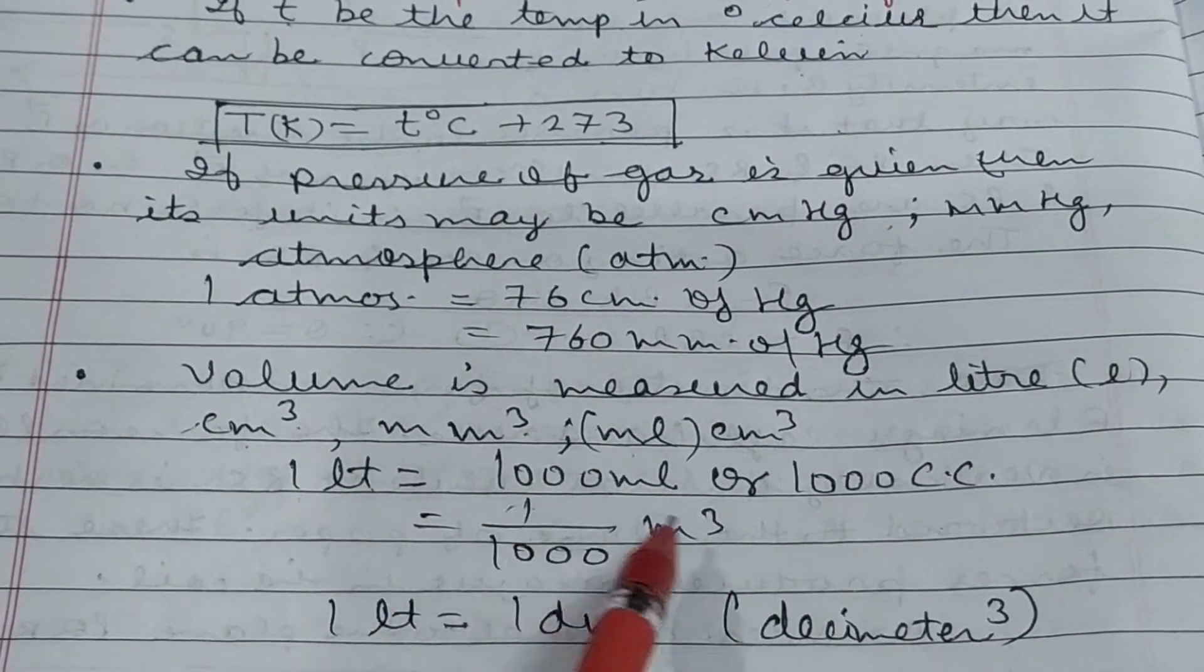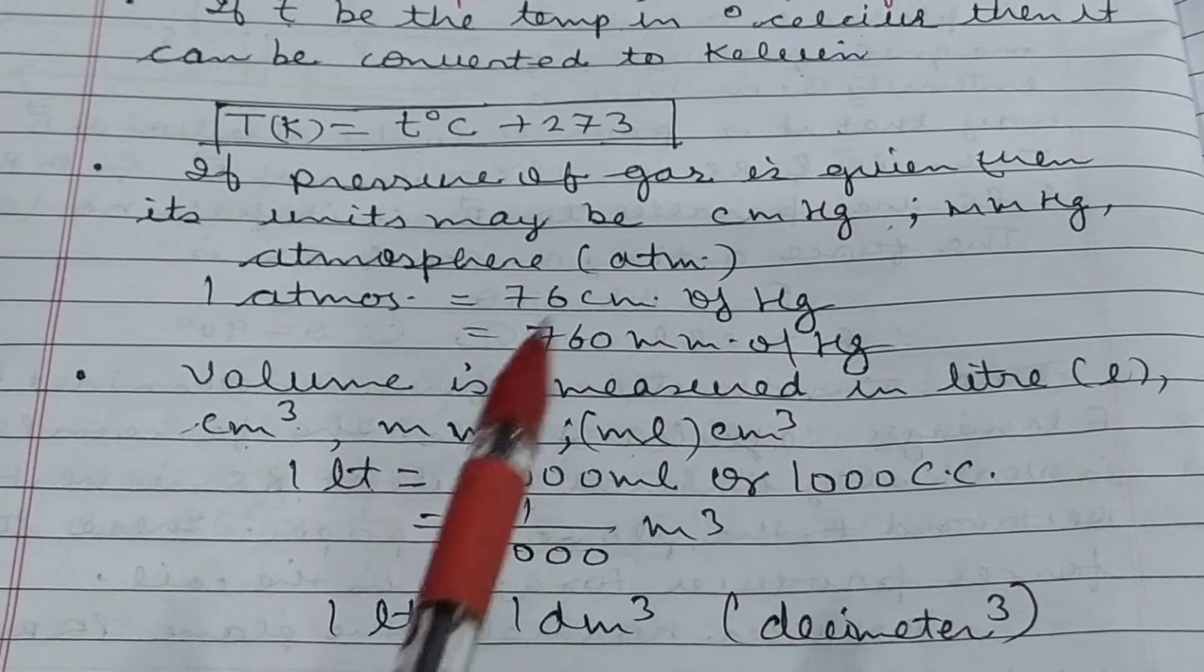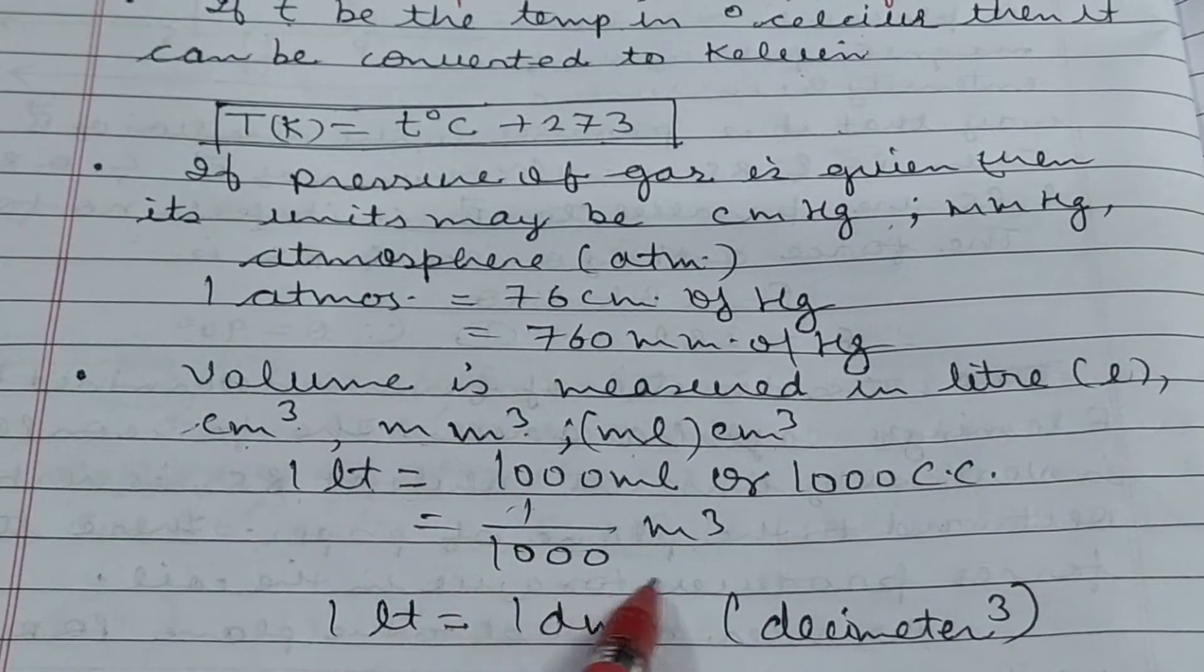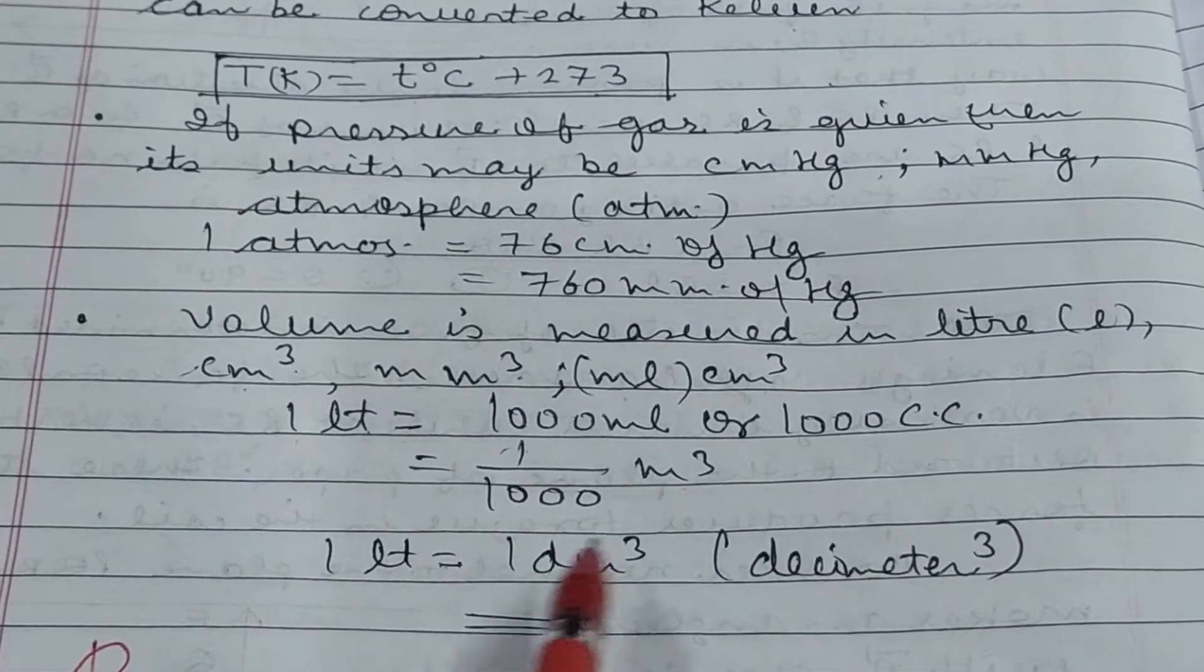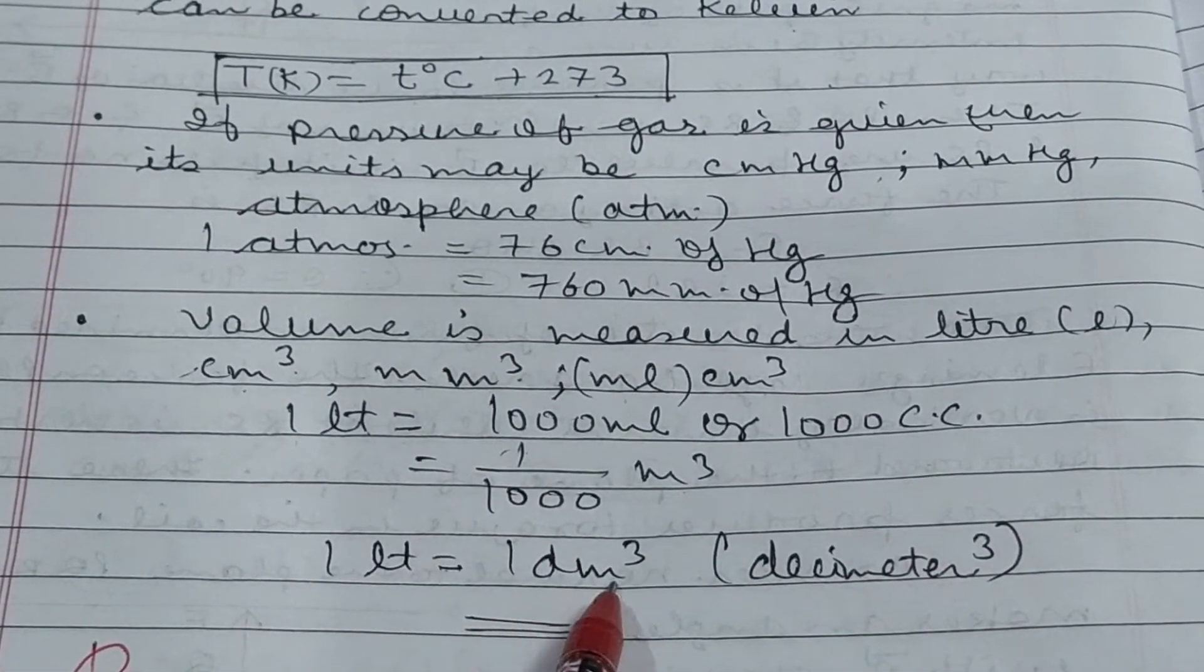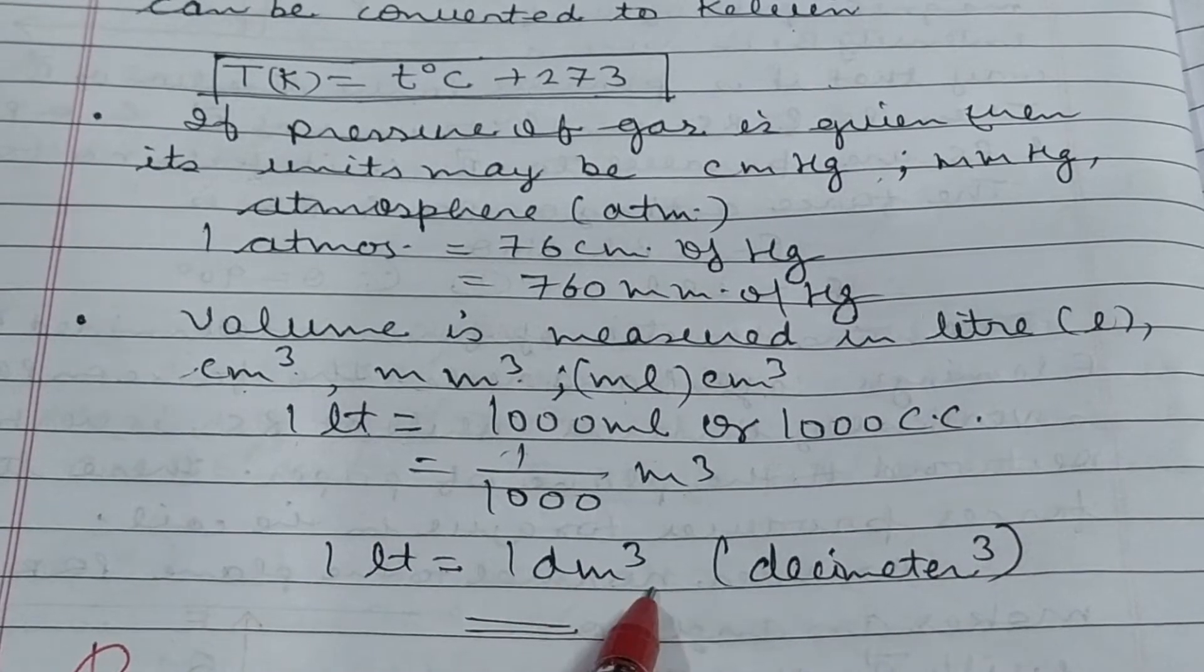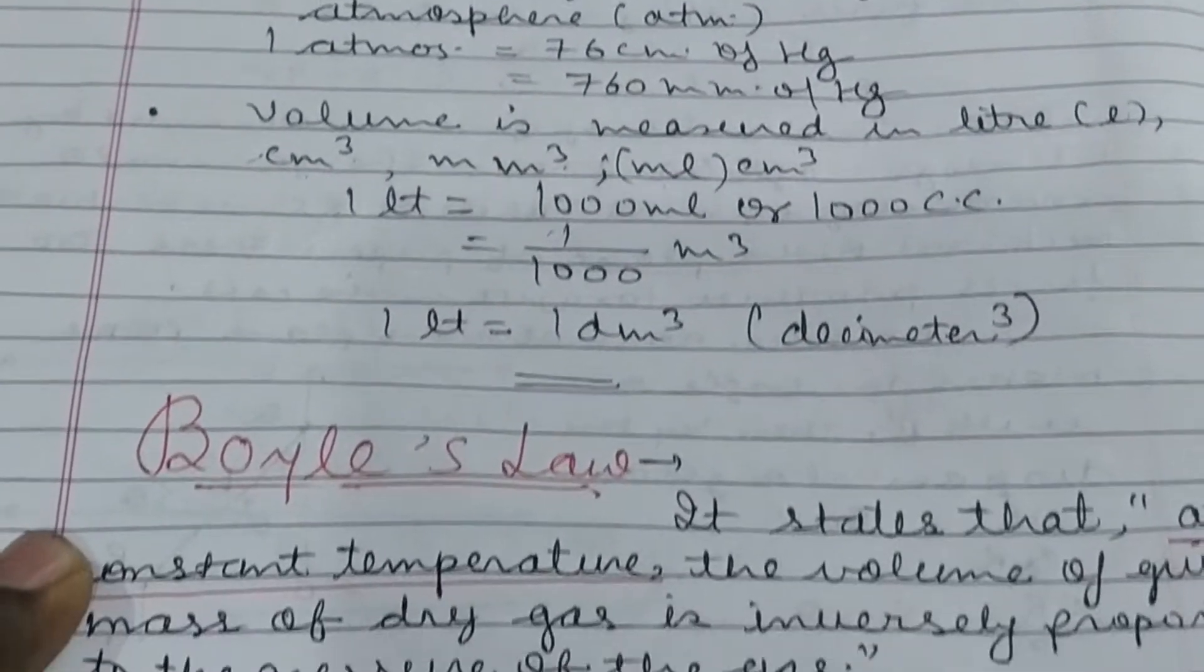Volume is expressed in liter, centimeter cube, or millimeter cube, where centimeter cube is also expressed as milliliter. One liter equals 1000 ml or 1000 cc. To convert liter to meter cube, divide by 1000. One liter also equals one decimeter cube.